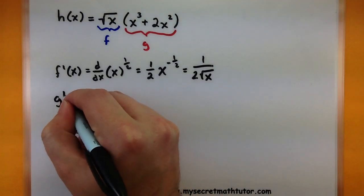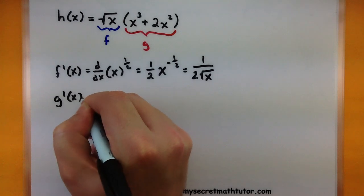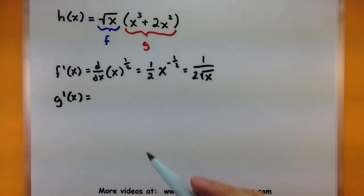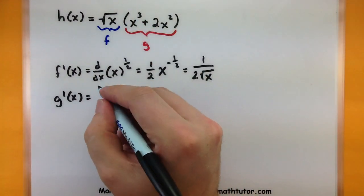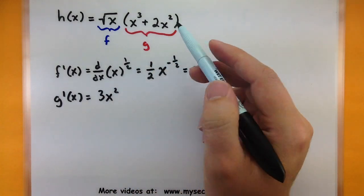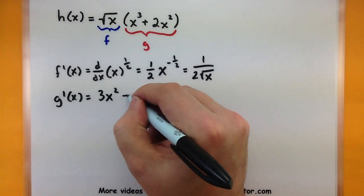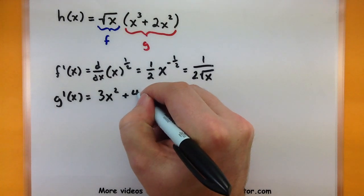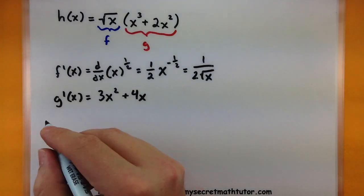Now let's spend a little bit of time finding the derivative of g. The derivative of x cubed is 3x squared, and the derivative of 2x squared is plus 4x. So the derivative of g is 3x squared plus 4x. Now we've got both of those pieces — it's time to put it in our formula.